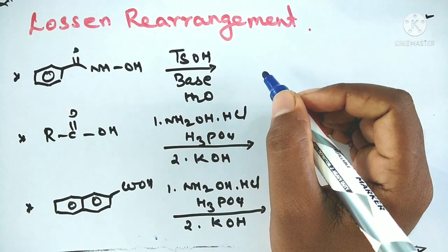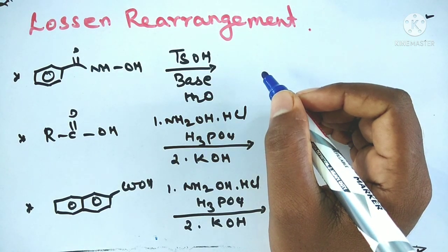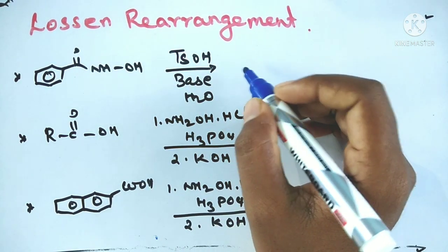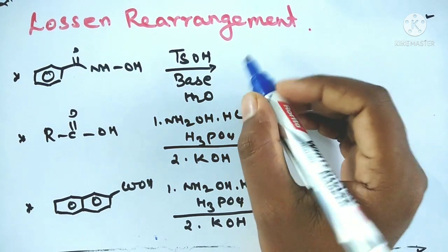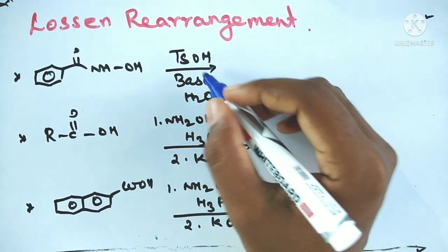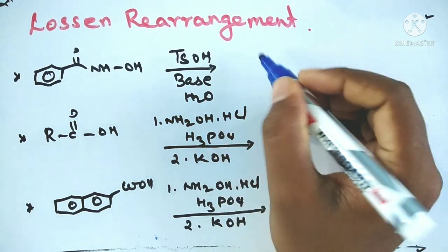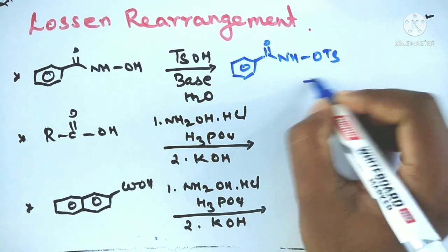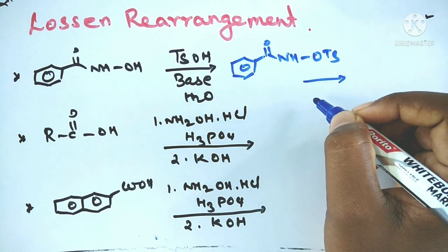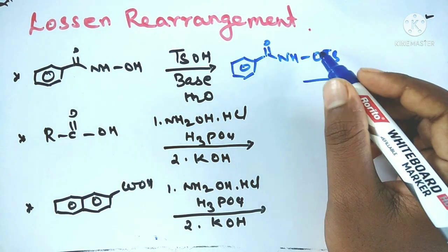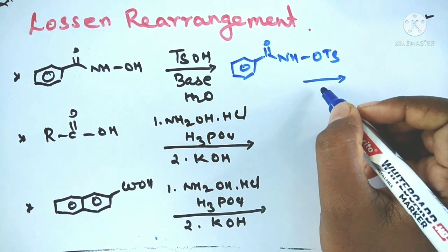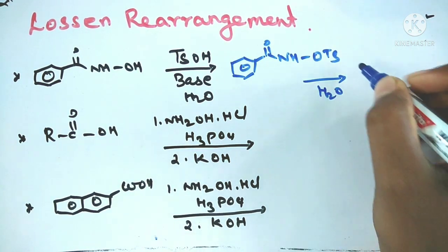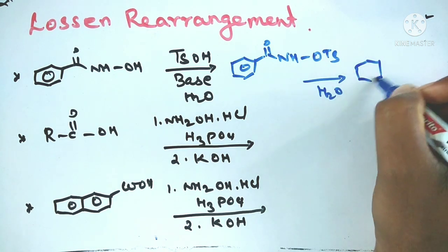Let's discuss some examples. Hydroxamic acid in the presence of para-toluenesulfonic acid or base followed by hydrolysis: the first step is formation of isocyanate, followed by hydrolysis, which gives the amine product.